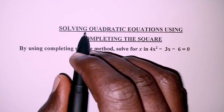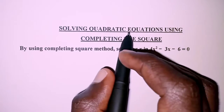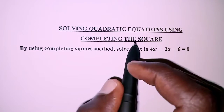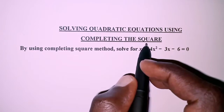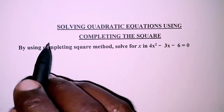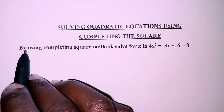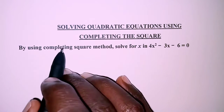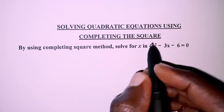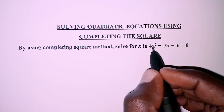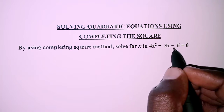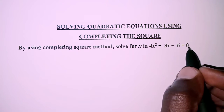In the question today, we are going to solve a quadratic equation using the completing the square method. The question reads: by using the completing the square method, solve for x in 4x squared minus 3x minus 6 equals 0.